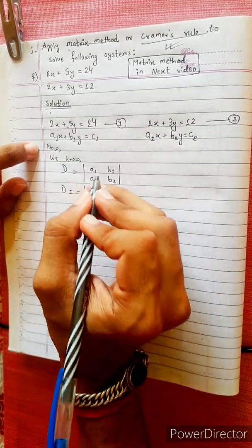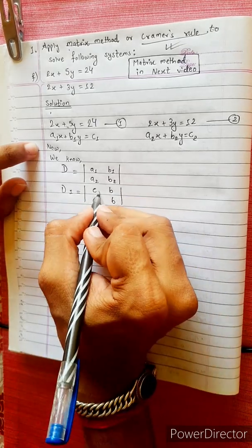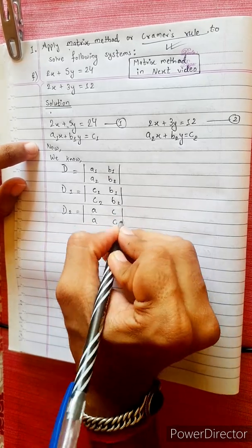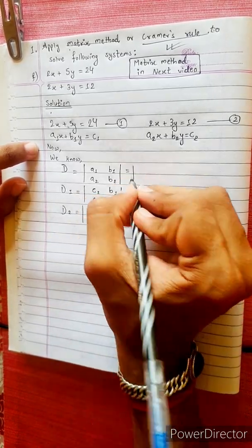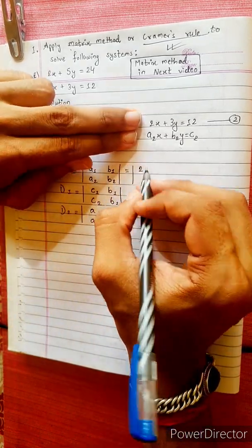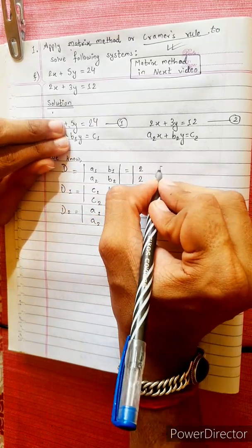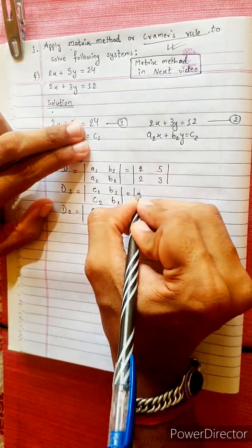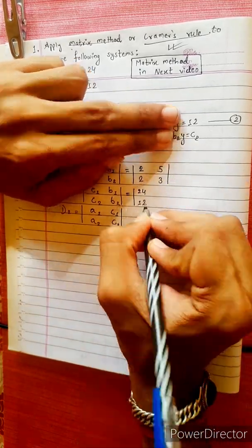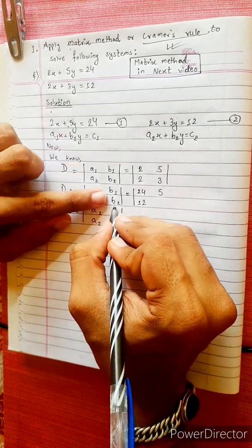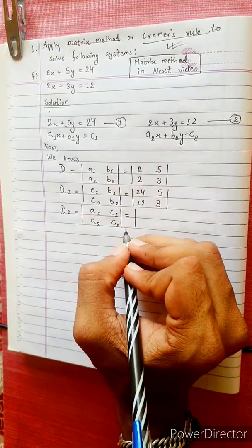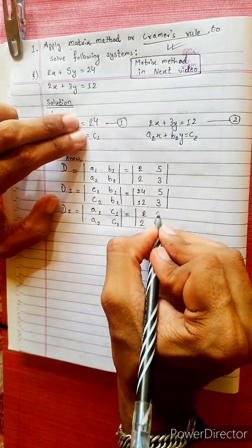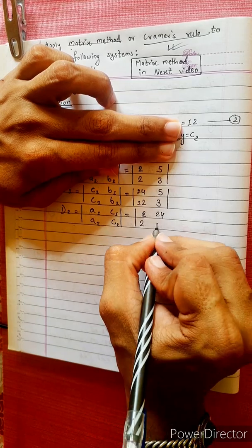D1 is the determinant with c1, b1 in the first row and c2, b2 in the second row. D2 is the determinant with a1, c1 in the first row and a2, c2 in the second row. So: a1 equals 2, a2 equals 2, b1 equals 5, b2 equals 3, c1 equals 24, c2 equals 12.